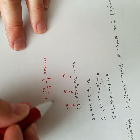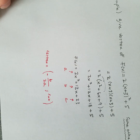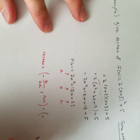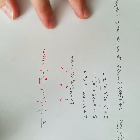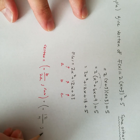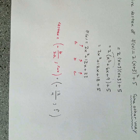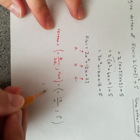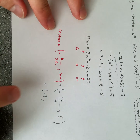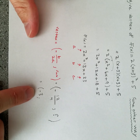So opposite of b over 2a: b is 12, and 2 times a is 4. I'll sub that into the function for the y-coordinate. What is negative 12 over 4? That would be negative 3. So the x-coordinate of the vertex is negative 3. Is that correct so far? Yes — that matches what we got before.